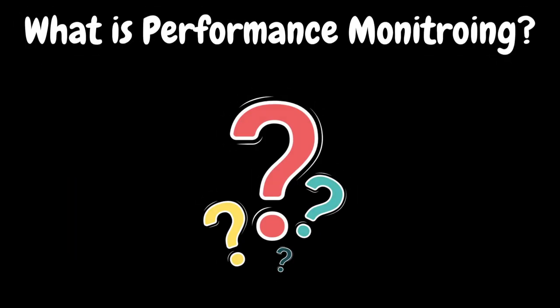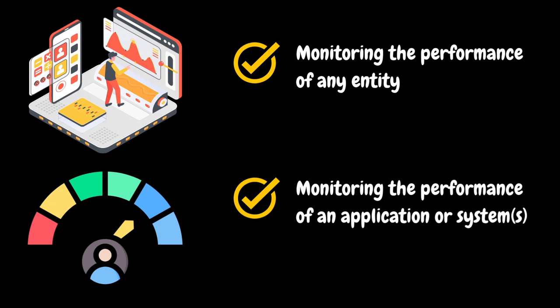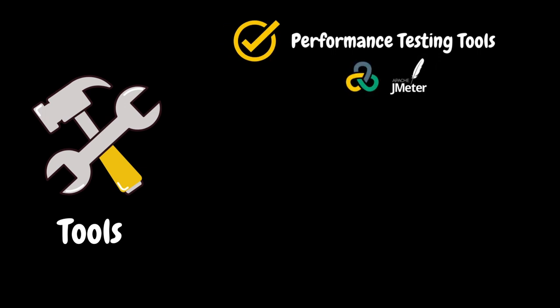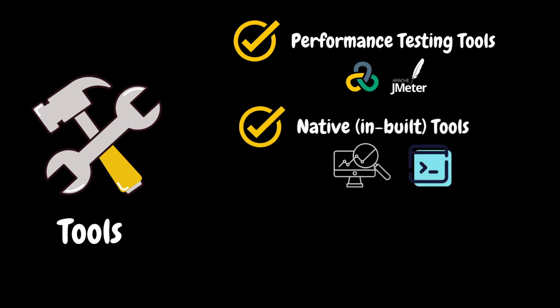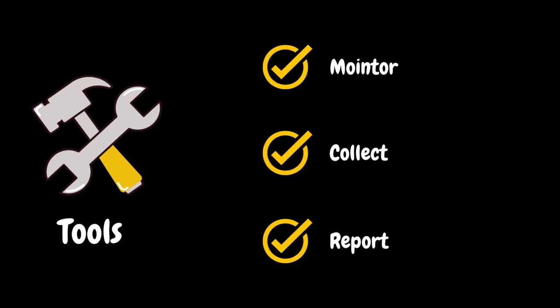Now let's try to understand what is performance monitoring. Basically, monitoring the performance of an entity. As we will be working with applications and systems, we can say it as monitoring the performance of an application or systems. There are different tools available to monitor different aspects of application or system performance. We have performance testing tools like LoadRunner, JMeter, etc. to monitor application performance. We have native inbuilt operating system tools like perfmon for Windows and top, iostat, vmstat, SAR, etc. for Unix-like systems to monitor system resources. And we have application performance monitoring tools, also called APM tools, like Dynatrace, AppDynamics, Neuralic, etc. to monitor the application as well as system resources. Basically, all these tools will monitor the application or system and collect and report different metrics for analysis purposes.